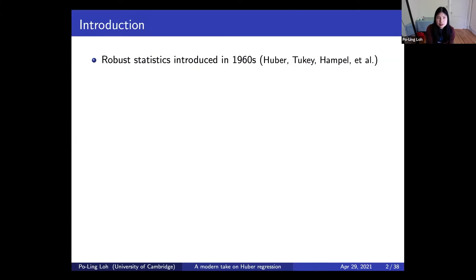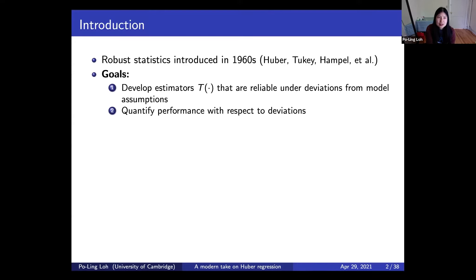To give a brief introduction to robust statistics: it's a subfield of statistics that is quite old, first introduced in the 1960s, 70s, and 80s. The main characters in the early days were Huber, Tukey, and Hampel, and their students. There were two main goals: first, to develop new estimators that perform well even under deviations from model assumptions — such as IID Gaussian, sub-Gaussian, or other nice distributions.